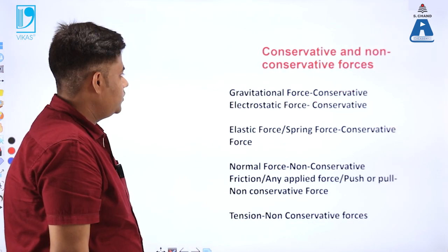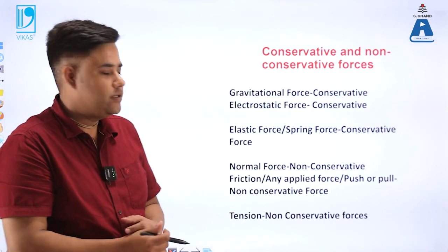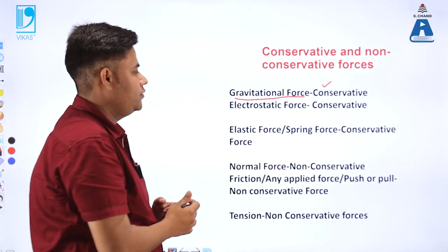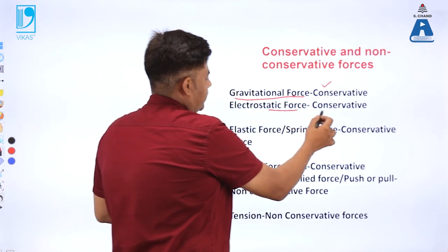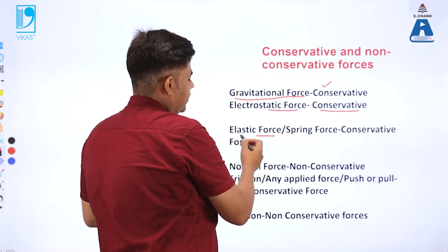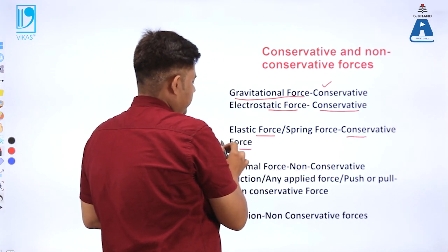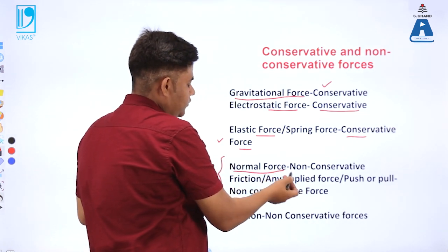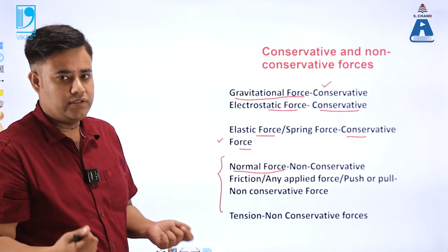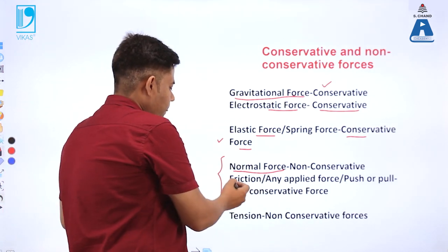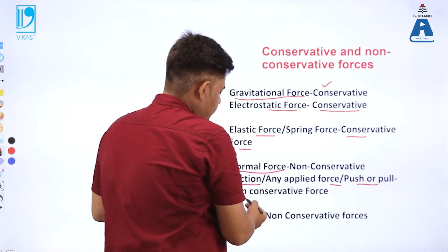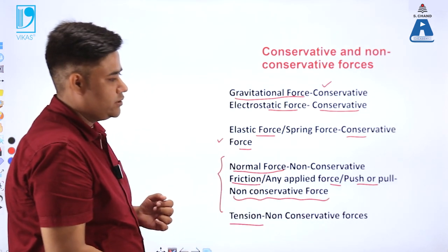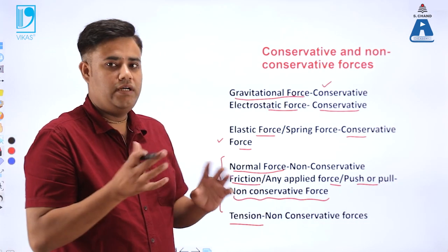Examples of conservative forces include gravitational force, which depends upon the initial and final position; electrostatic force; and the spring or elastic force. Examples of non-conservative forces include normal force, applied force (push or pull), friction, and tension — because tension depends upon the path that the system follows, not on the initial and final positions.